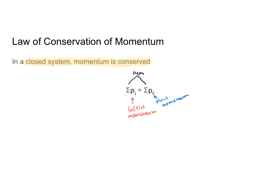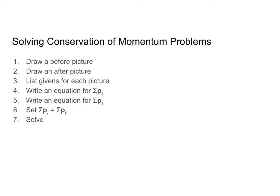Let's move forward to talk about how to solve conservation of momentum problems. There are a few steps, and you will likely recognize these because they're very similar to our conservation of energy problems. But instead of identifying the types of energy, you have to identify the direction of our velocity and therefore the direction of our momentum. Just as with conservation of energy problems, you want to start by drawing a before and an after picture. Once you've done that, you're going to list your givens with each picture. Using your pictures and your givens, you're going to write an equation for the sum of your initial momentum and then for the sum of your final momentum.